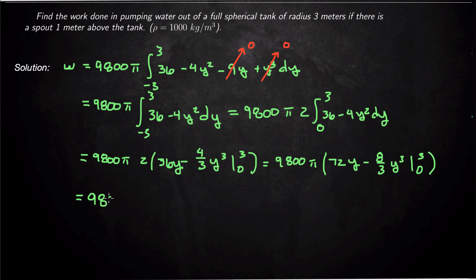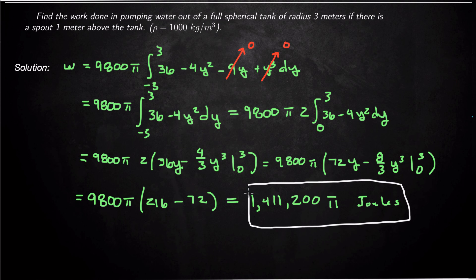And that ends up being 9,800 π times, let's see, 72 times 3, though it's 216, minus 3³ is 27. Divide that by 3, we get 9. So 8 times 9 is 72. And at the end of the day, I guess you keep going, that's 144. And then 144 times 9,800 ends up being 1,411,200. And then just leave that π the way it is. And then that's in joules. So quite a big answer, but it's a big tank full of water, so it makes sense. It's probably like, I don't know, 4 megajoules or so since π is multiplied onto that. So probably 4 or 5 megajoules somewhere around there. Anyway, that's how we do it.